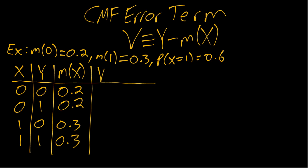And now for v, because v is defined as y minus m of x, we can just do the subtraction. So in the first row, 0 minus 0.2, we got negative 0.2. For the second row, we'll get 1 minus 0.2 or 0.8, 0 minus 0.3, negative 0.3, and 1 minus 0.3, 0.7.